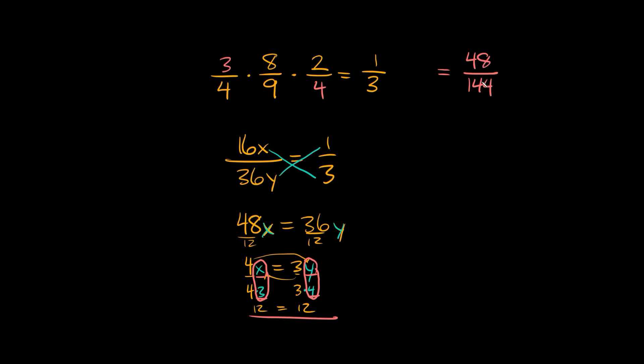Now 48 divides evenly into 144. So we can divide the top and the bottom by 48. So if we do that on top we would get 1 and on the bottom we would get 3.